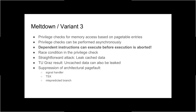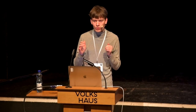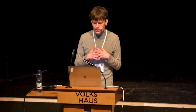It's not entirely clear yet what's going on in the variant 3 attack. There seems to be some race condition involved in a privilege check in the processor. A straightforward result is that you can leak cached data from the kernel — in particular from the L1 data cache. The GRAZ researchers have also figured out that you can read uncached data, though it's not entirely clear what influences how well that works precisely.